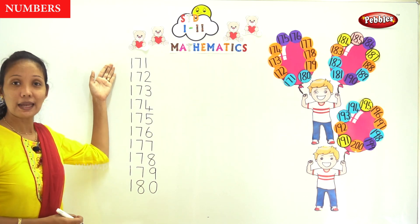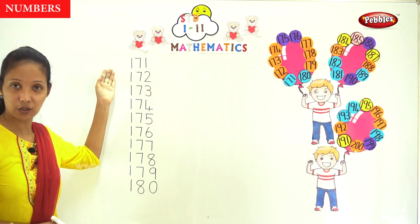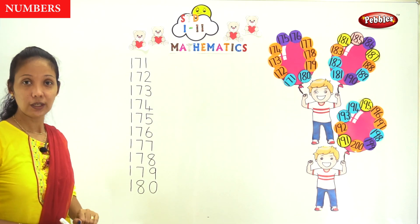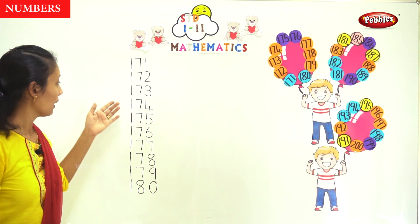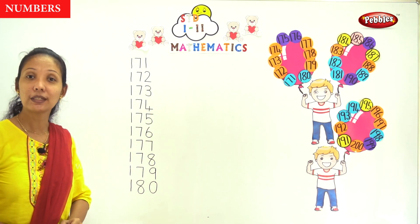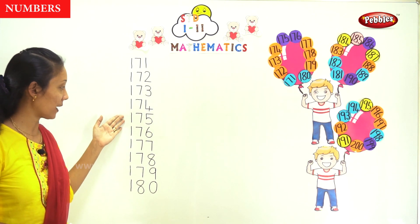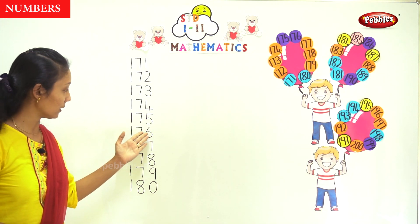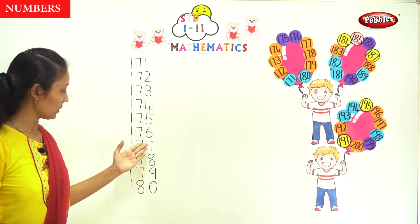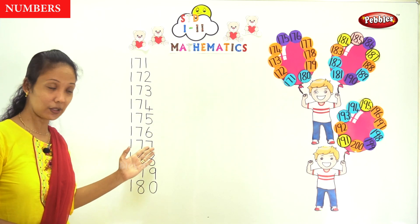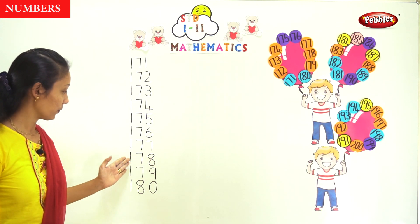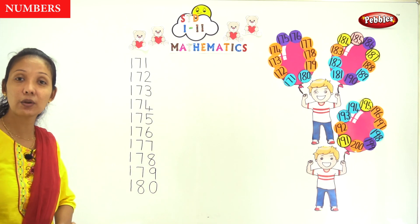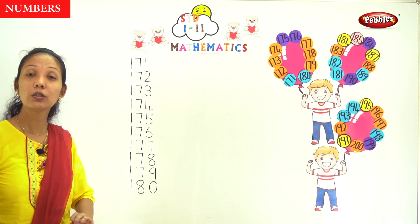So you have 171, 171, 172, 172, 172, 173, 173, 173, 178, 174, 175, 174, 176, 176, 177, 178, 179, 179, 180, 180.